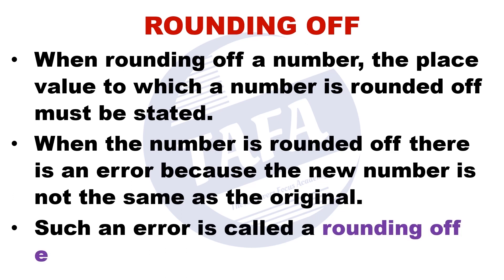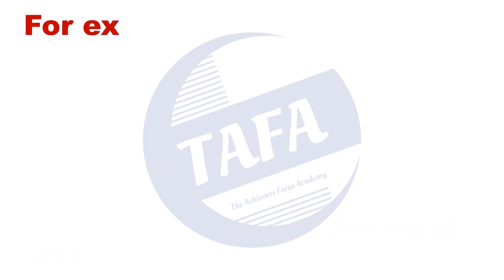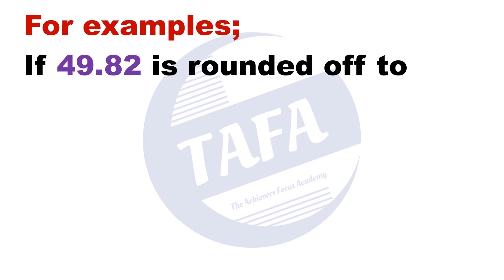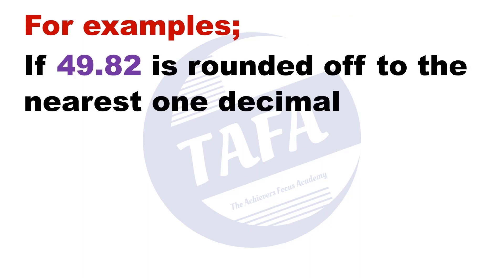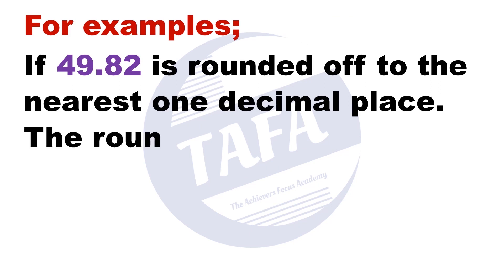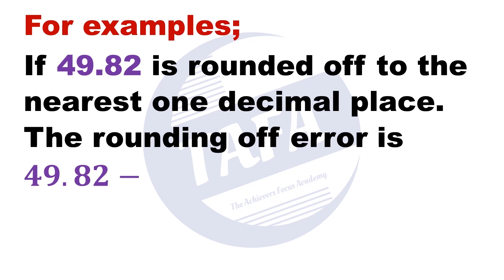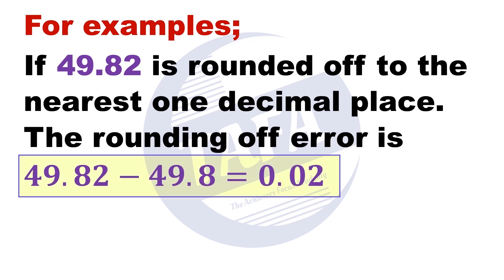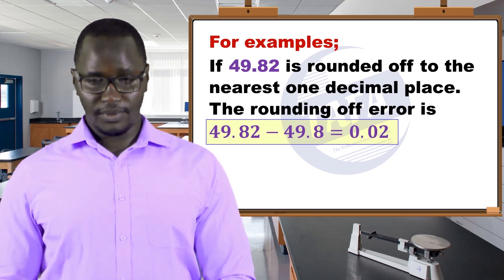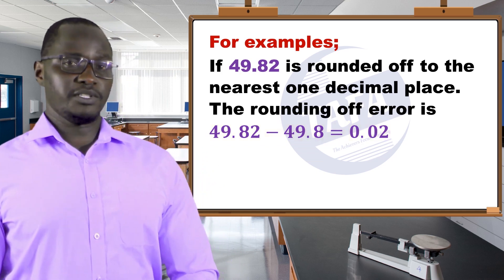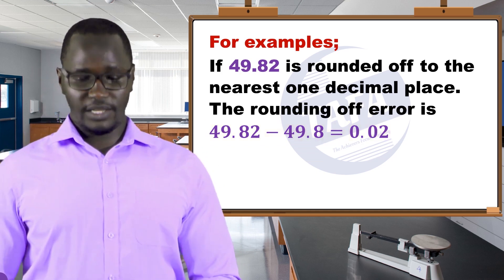For example, if 49.82 is rounded off to the nearest one decimal place, the rounding off error is given as the original number 49.82 minus the rounded off number 49.8, which gives us 0.02. In this case, 0.02 is the rounding off error.